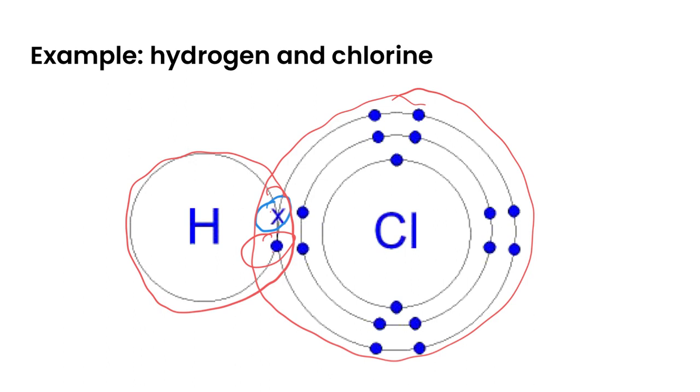So important points to remember: ionic compounds are a transfer of electrons in order to create that electrostatic attraction of ions to form an ionic bond. Whereas covalent bonds share electrons to become chemically linked and create that covalent bond. That's it for this video. Let's move on to our next task.